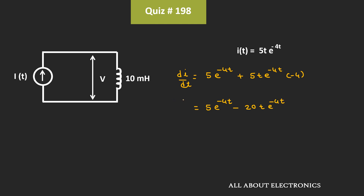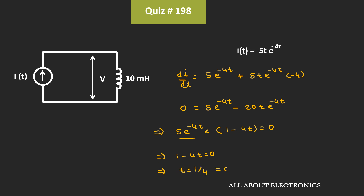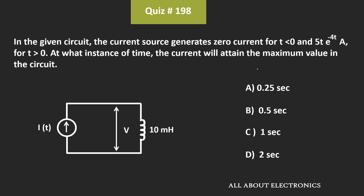Whenever the current attains the maximum value, di/dt is equal to zero. From this we can say that 5·e^(-4t)·(1 - 4t) equals zero. This expression becomes zero when t equals infinity, so we set 1 - 4t = 0, giving t = 1/4. That means at time t = 0.25 seconds the current i(t) will be maximum — so for the given question, option A is the correct answer.